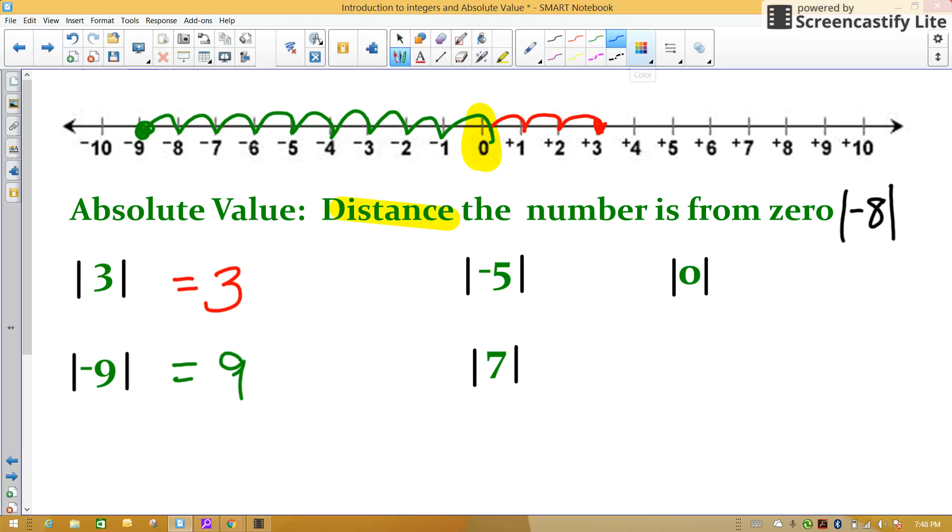Find negative 5 on your number line. How many spaces from zero is negative 5? 1, 2, 3, 4, 5.